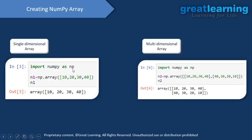To create a single dimensional array, we start by importing the NumPy library: import numpy as np. Here, np is known as the alias. Once we import NumPy, we create an array using np.array and pass in a list of values inside square brackets. We store it in object n1, then print it out and this is the result.